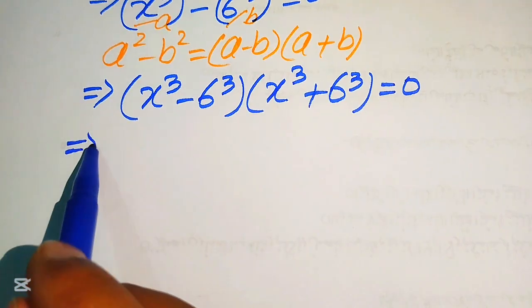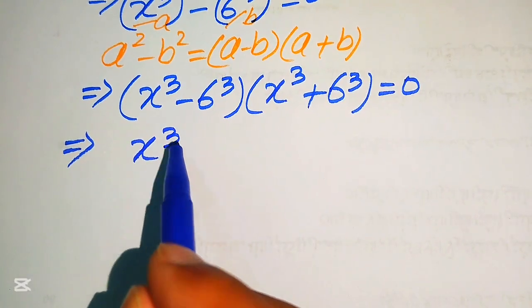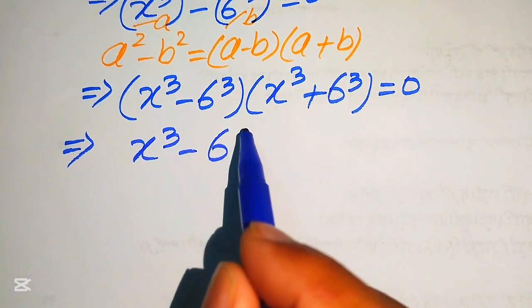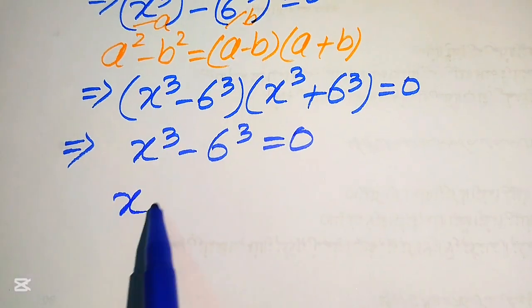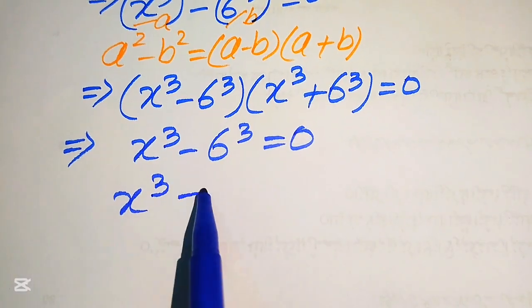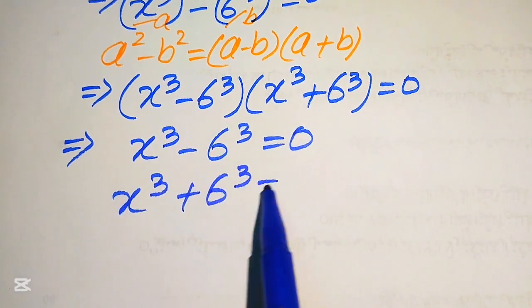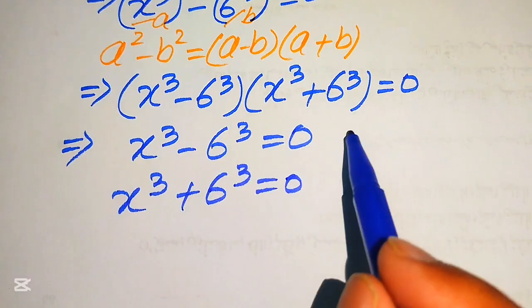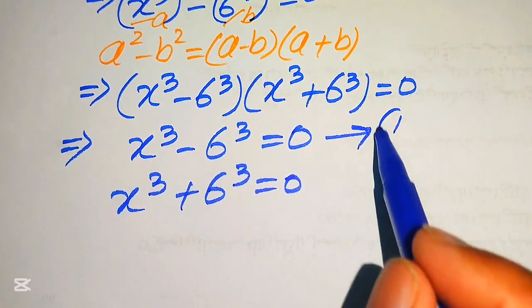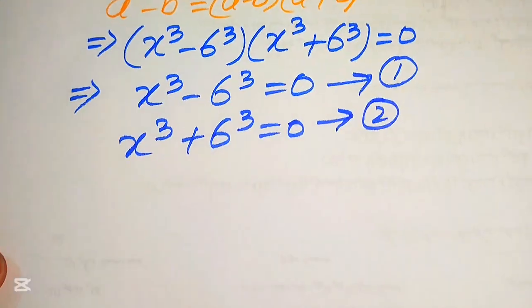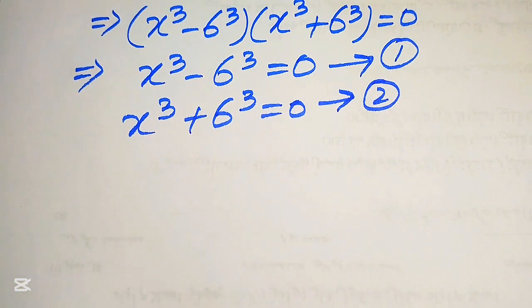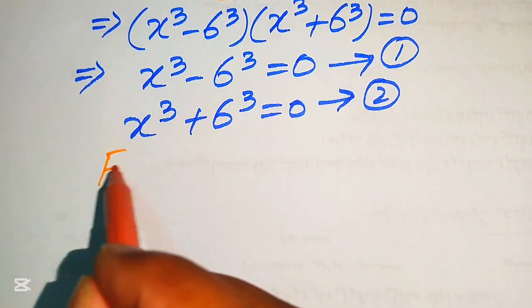We divide this into two cases. Case 1: x³ − 6³ = 0 (equation 1). Case 2: x³ + 6³ = 0 (equation 2). We now solve these two equations one by one, starting with equation 1.